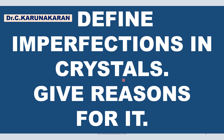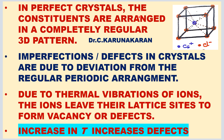What is called a perfect crystal? In a perfect crystal, the ions or constituents — the atoms — are arranged in a completely regular three-dimensional pattern. In imperfect or defect crystals, the ions are not arranged in a completely regular three-dimensional pattern. Imperfections arise due to deviation from the regular periodic three-dimensional pattern.